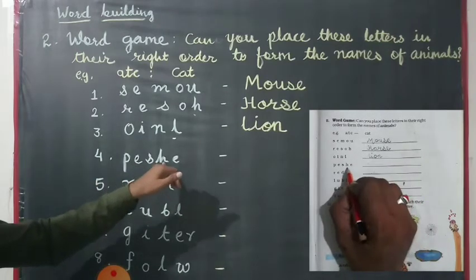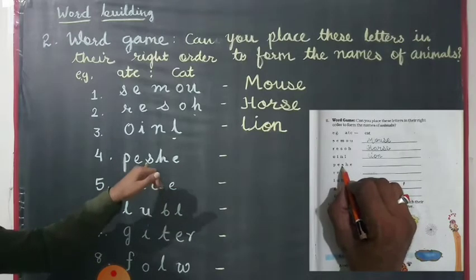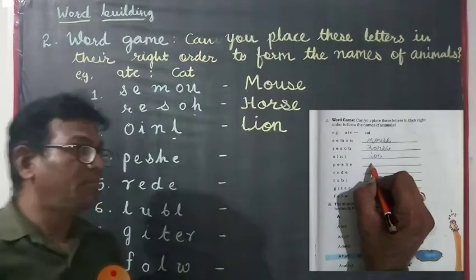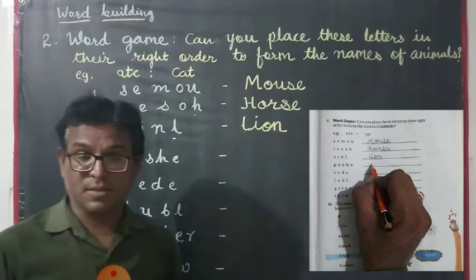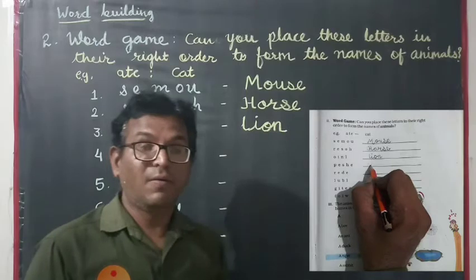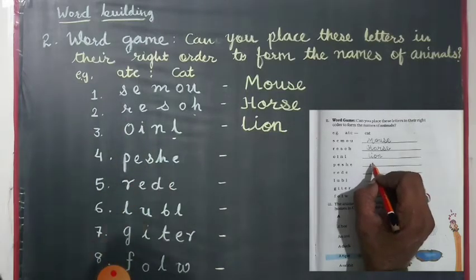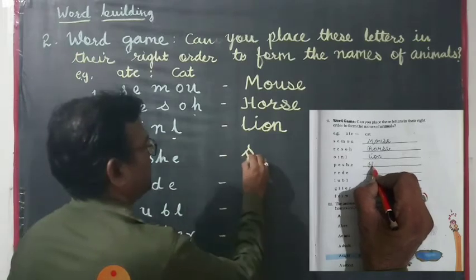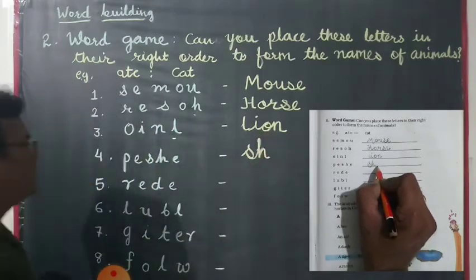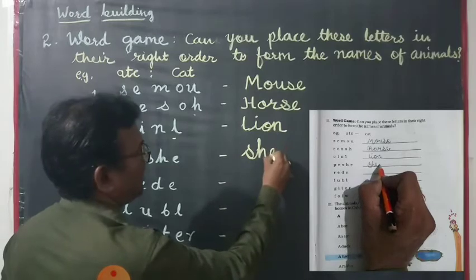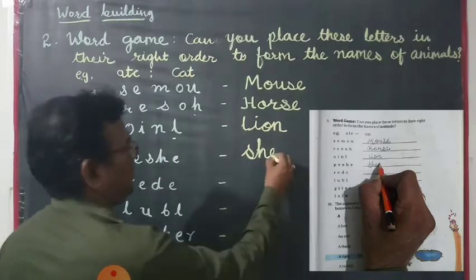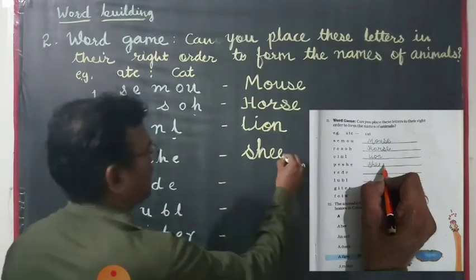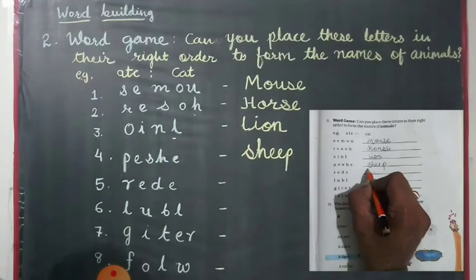Now the letters P, S, H, E, E — find out, my dear. I give you a hint: this is the animal which gives us wool. We put S, H, E, E, P. Yes, the word is sheep.